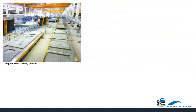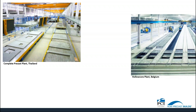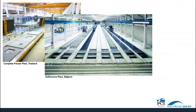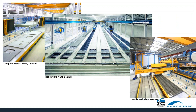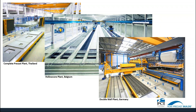Here is one of our customers, a complete precast plant in Thailand. They make product for 700 apartments per month and it is one of the largest plants in the world. This Holocor plant in Belgium is fully automated with low labour consumption. And here is a double wall plant in Germany. In addition, we have over 50 plants here in North America. Thank you again for joining us.